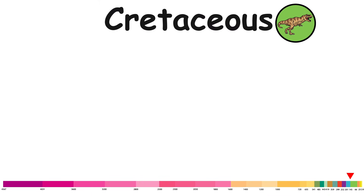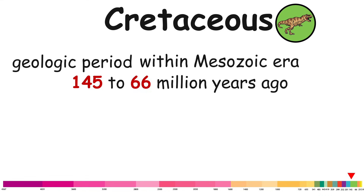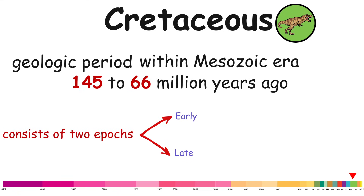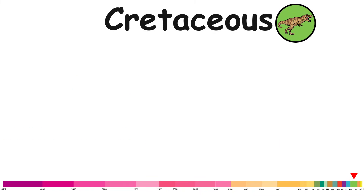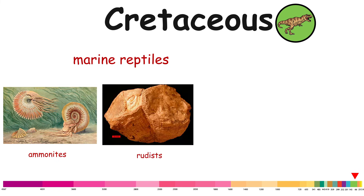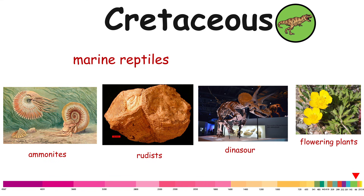Cretaceous. The Cretaceous is a geologic period within the Mesozoic era, spanning approximately from 145 to 66 million years ago. It consists of two epochs: Early and Late. The Cretaceous was a period with a relatively warm climate, resulting in high eustatic sea levels that created numerous shallow inland seas. These oceans and seas were populated with now-extinct marine reptiles, ammonites, and rudists, while dinosaurs continued to dominate on land. Flowering plants appeared and began to rapidly diversify, becoming the dominant group of plants across the Earth.